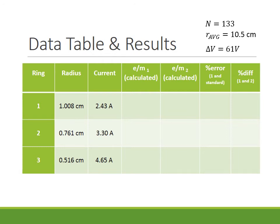Also for me, on my trial run, I also have capital N, the number of turns in the Helmholtz coils, 133. Average radius of my coils, 10 and a half centimeters. And the voltage delta V that I set that accelerated the electrons for me was 61 volts, but that will be different for you.